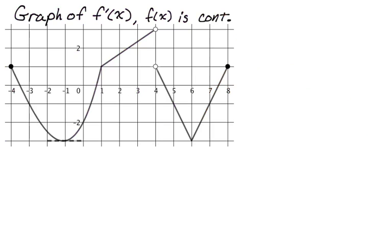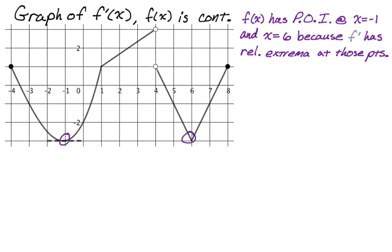Now we're going to look at a graph of a continuous function where you're given the graph of f prime — kind of a weird looking graph. There's a horizontal tangent line at x equals negative one; the problem statement would probably just tell you that. If you're given the graph of f prime, you want to be good at reading graphs of derivatives. f of x has points of inflection at x equals negative one and x equals six, because f prime has relative extrema at those points.